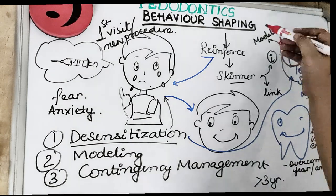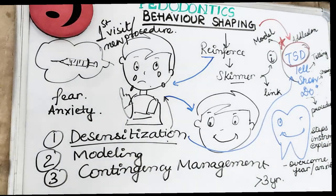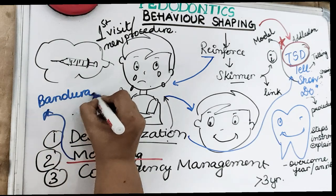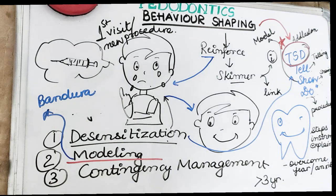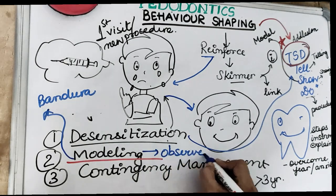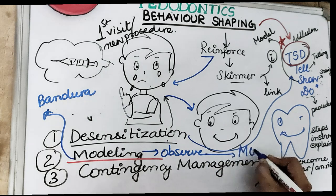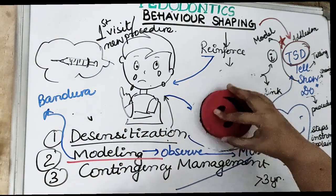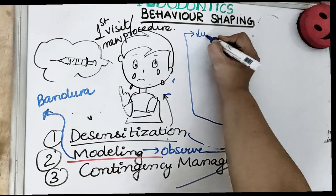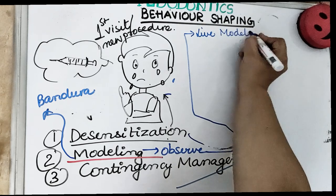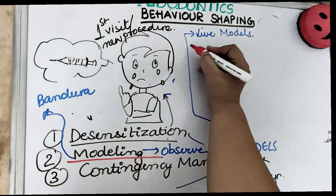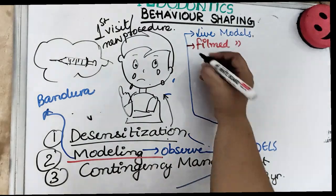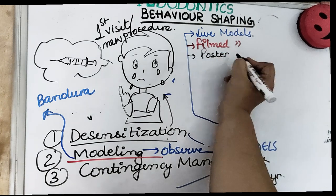Coming to the second behavior modification technique, which is modeling. Modeling was introduced by Bandura and developed from the social learning principle. The modeling procedure involves allowing a patient to observe one or more individuals, or demonstrating the procedure using models. Models can be live models such as siblings or parents of the child, any other patient, or filmed models, posters, or visual audio aids.